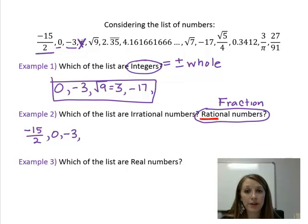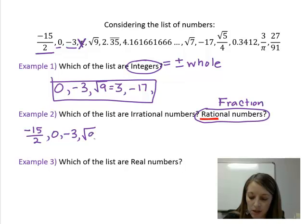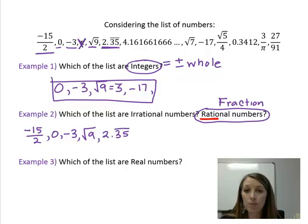Square root of 9. We already said it simplified into a whole number earlier. So that means it goes into my rational number group because it is a whole number. 2.35 does fit into my rational number group because rational numbers accept decimals that terminate and repeat. And this is an example of a repeating decimal.